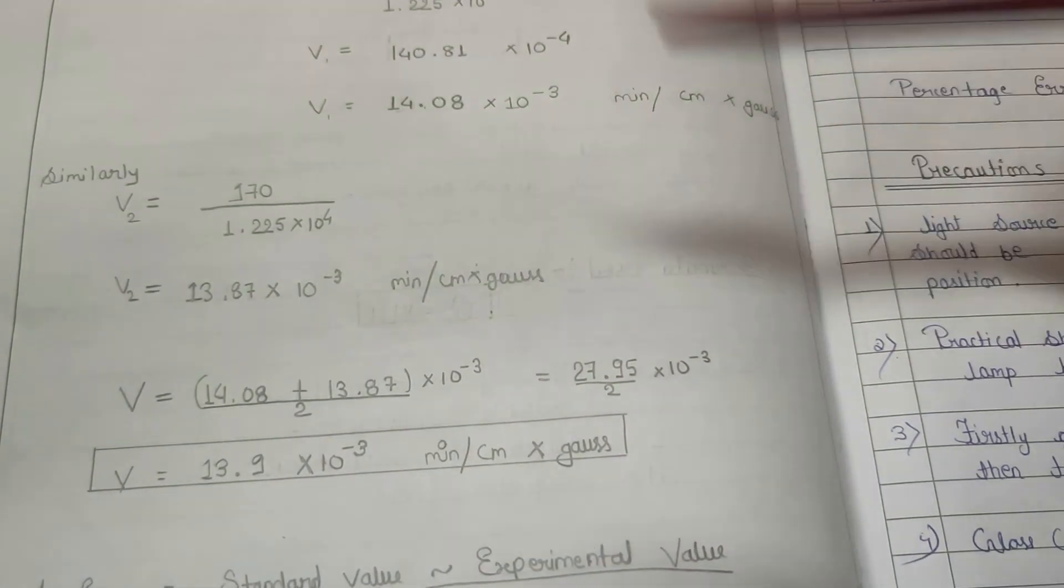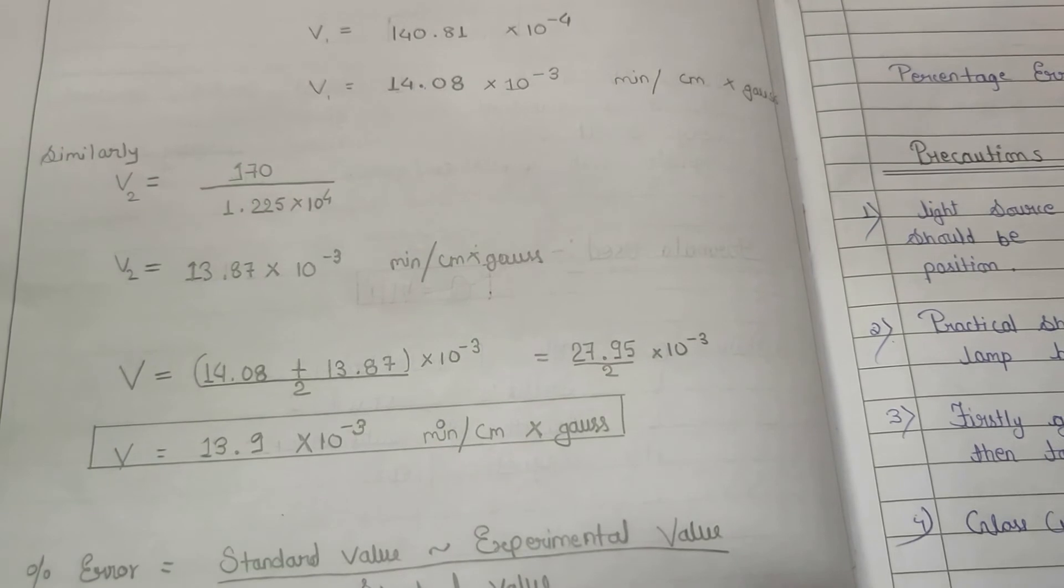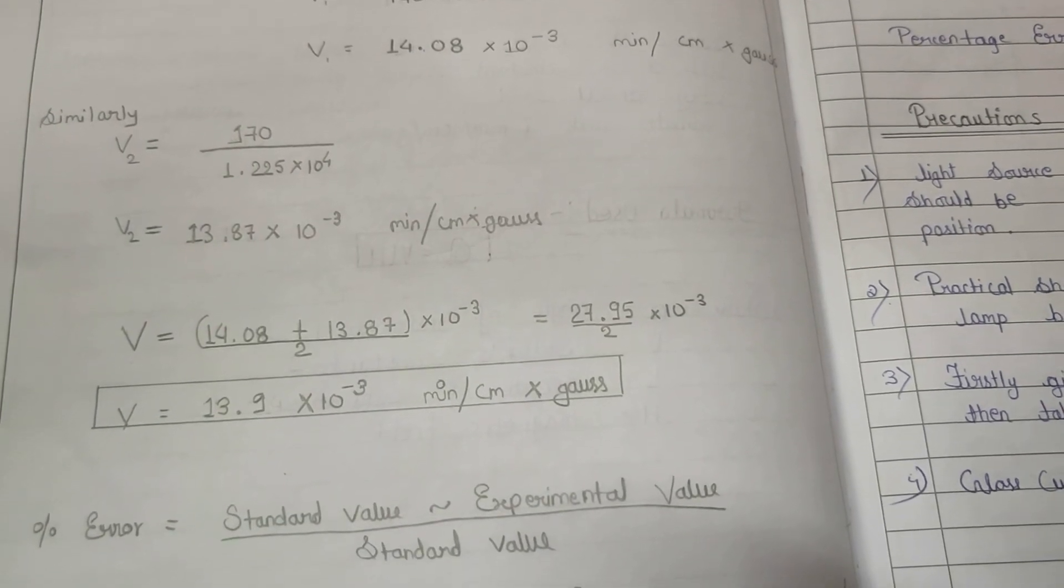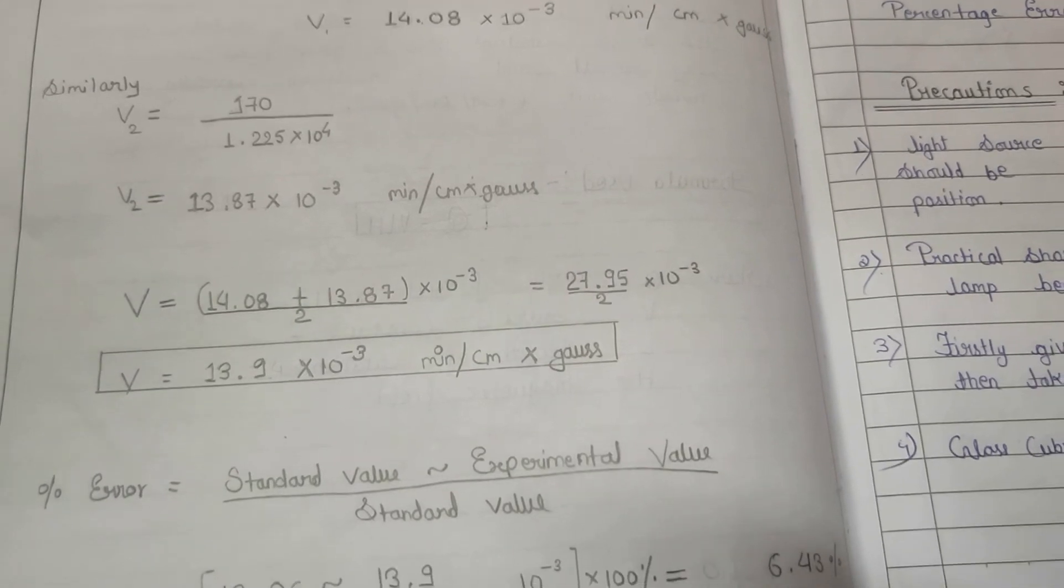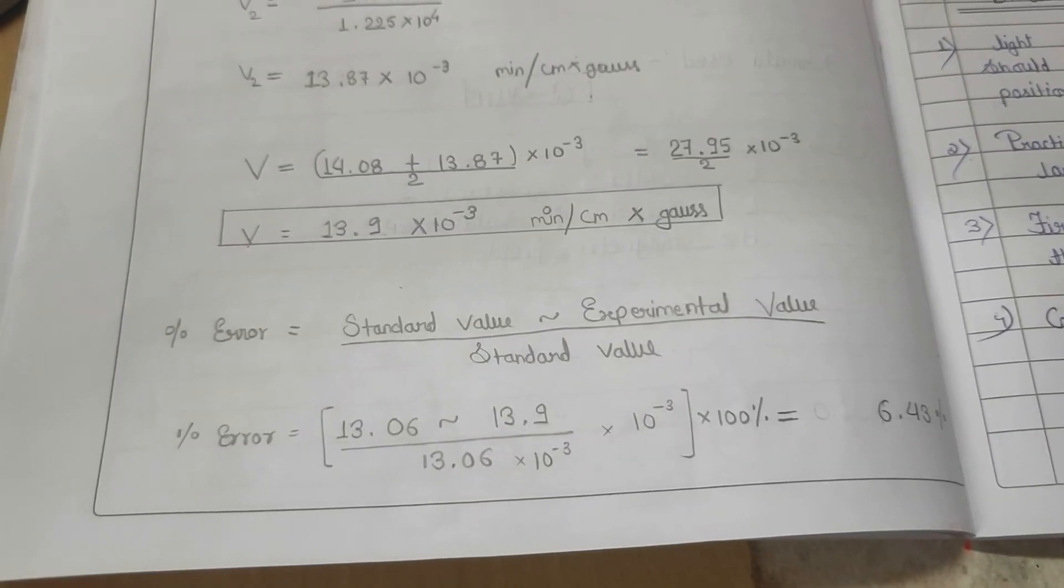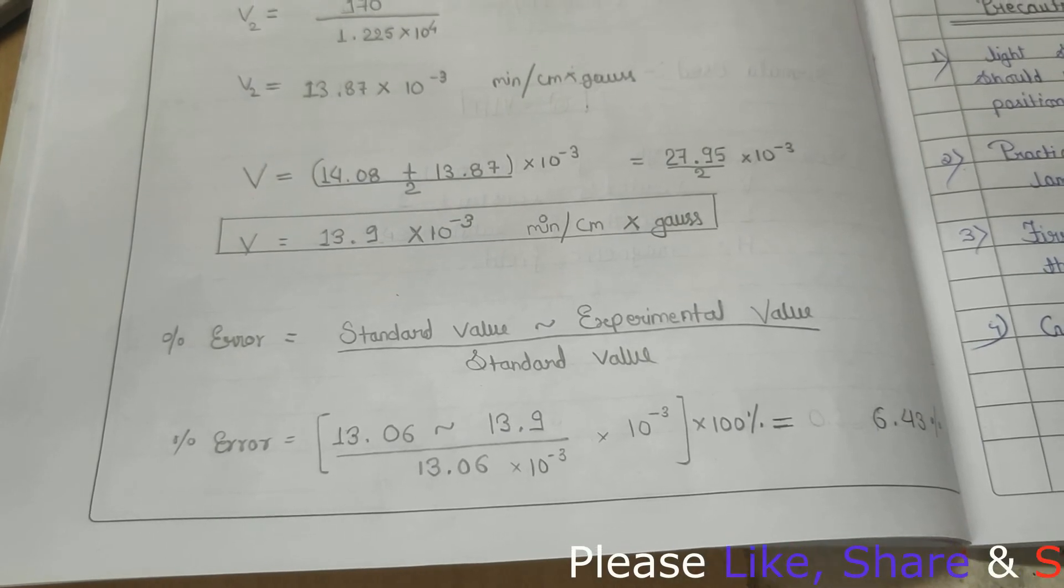When we take the average, we will get the final Verdet's constant, which is 13.9 times 10 to power minus 3 minute per centimeter Gauss. We have the standard value for the Verdet's constant for water. The standard value is 13.06 times 10 to power minus 3.